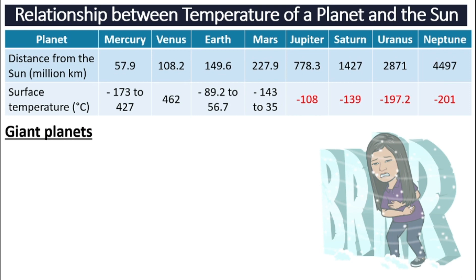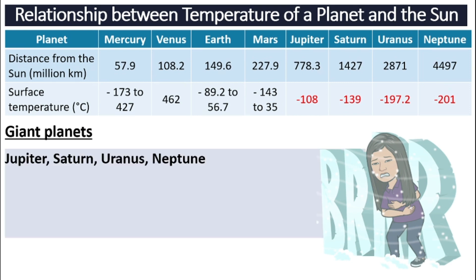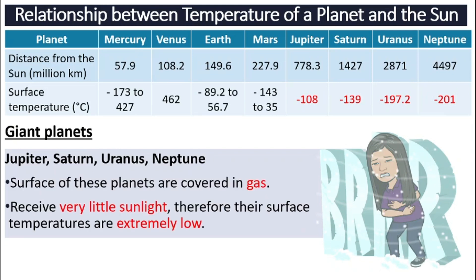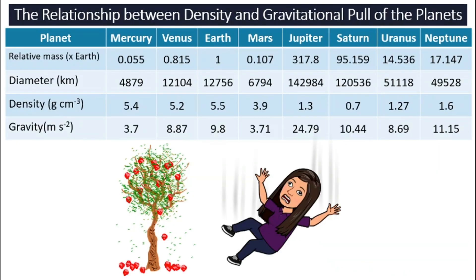Then we will look at our giant planets: Jupiter, Saturn, Uranus, and Neptune. They are all very, very cold. The surfaces of these planets are covered in gas and they receive very little sunlight. That is why the temperature is so low. The further away a planet is, the colder it becomes.